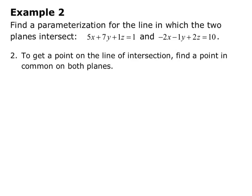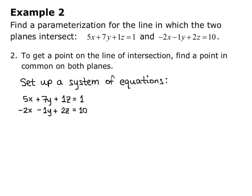To get a point on the line of intersection, we need to find a point in common on both planes. So we're going to set up a system of equations: 5x + 7y + z = 1, there's our first plane, and -2x - y + 2z = 10, our second plane.